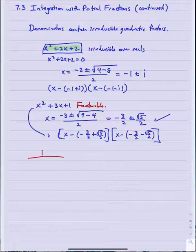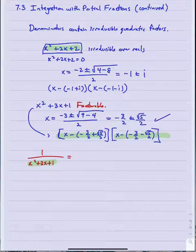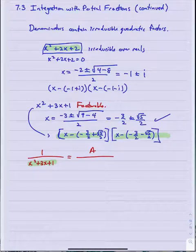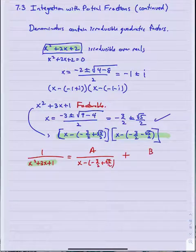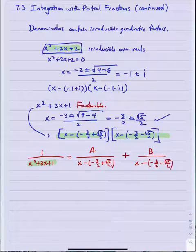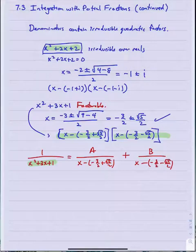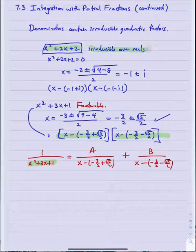If I asked you to write 1 over x squared plus 3x plus 1 in a partial fraction decomposition, it would be possible because this denominator is factorable into two linear factors. We're not really going to dabble in those kinds of quadratics. The ones we're interested in are quadratics that are irreducible, like x squared plus 2x plus 2.